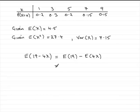Now, the expected value of any constant is always that constant. So we can just put that down there as 19.